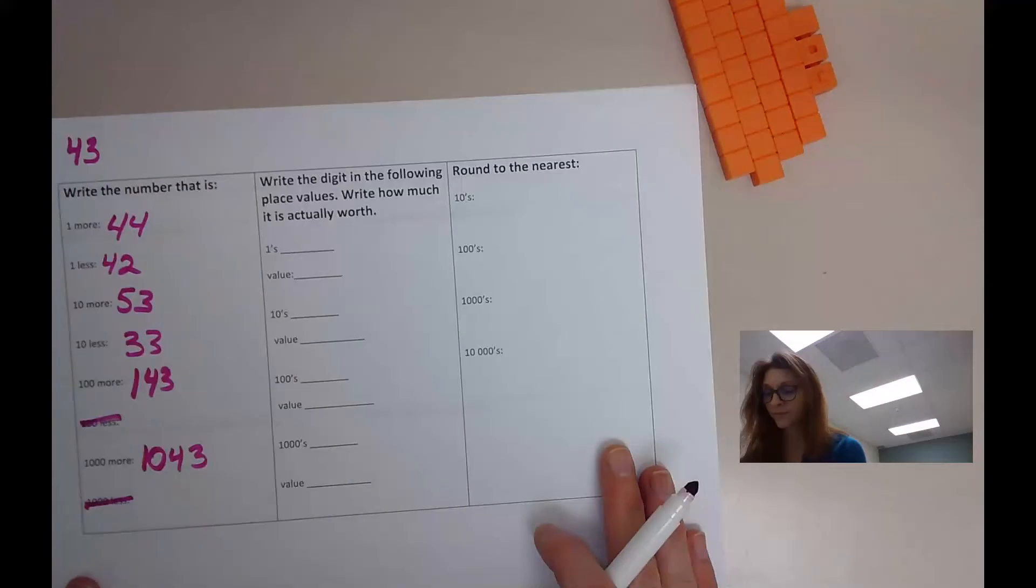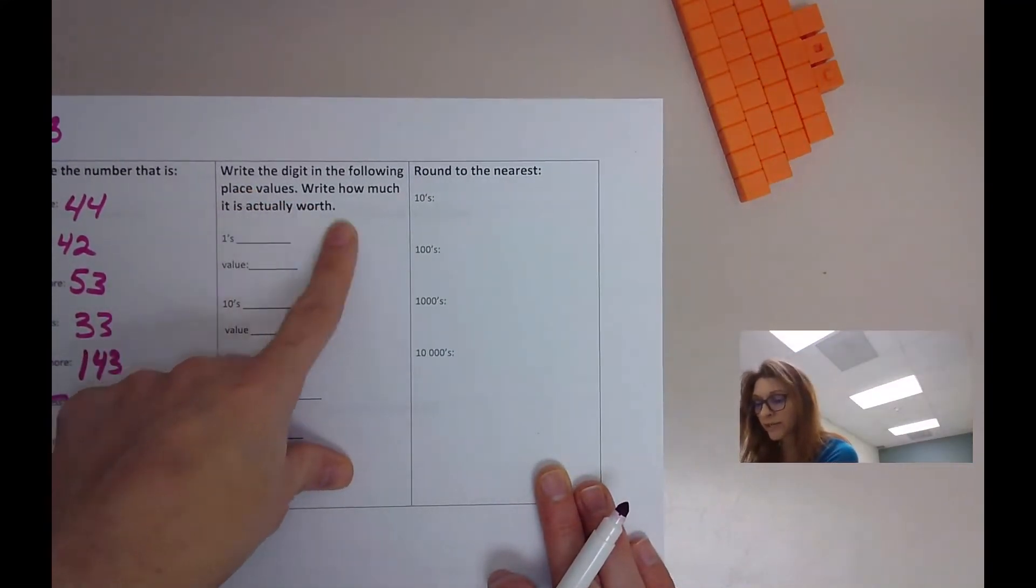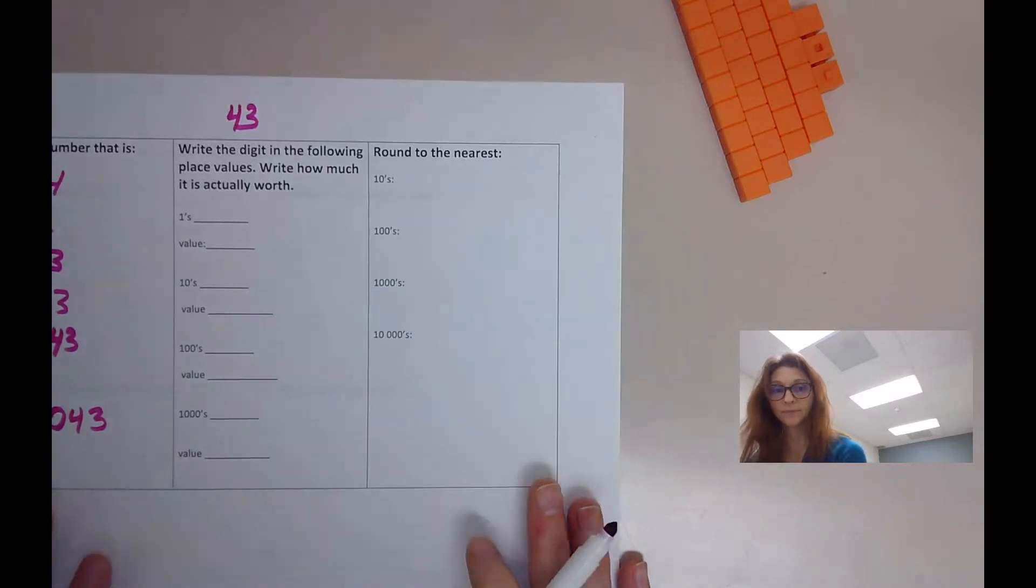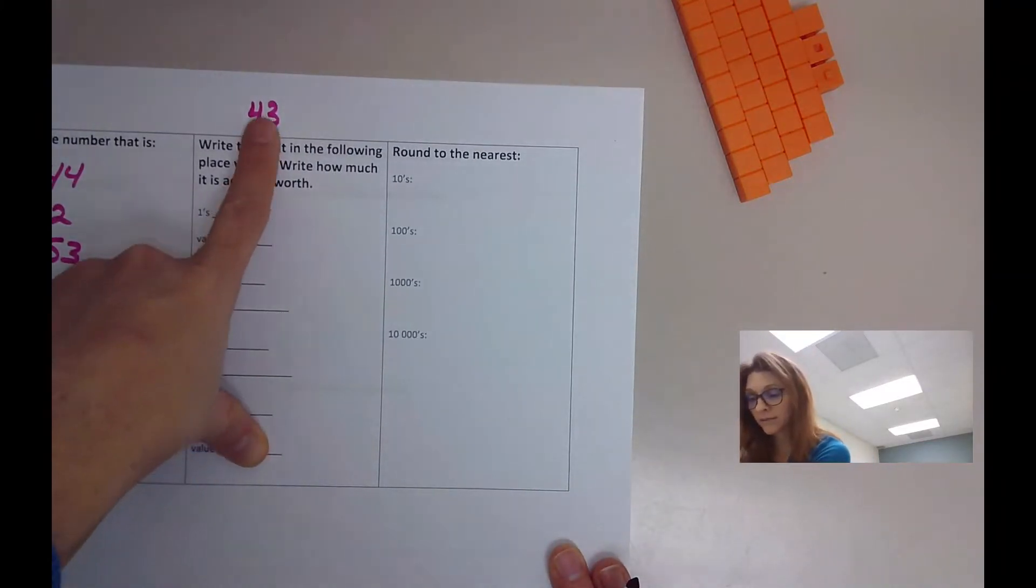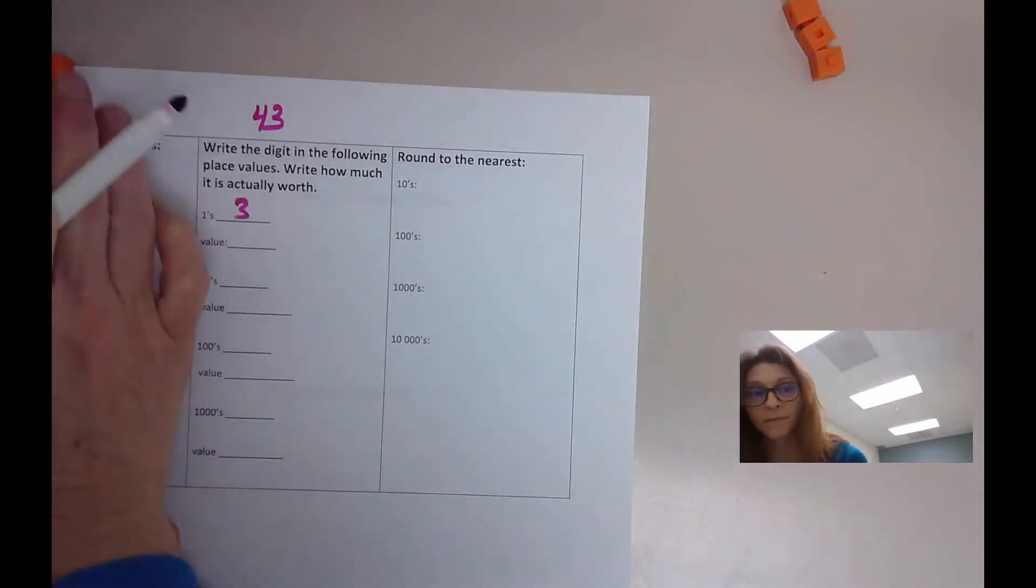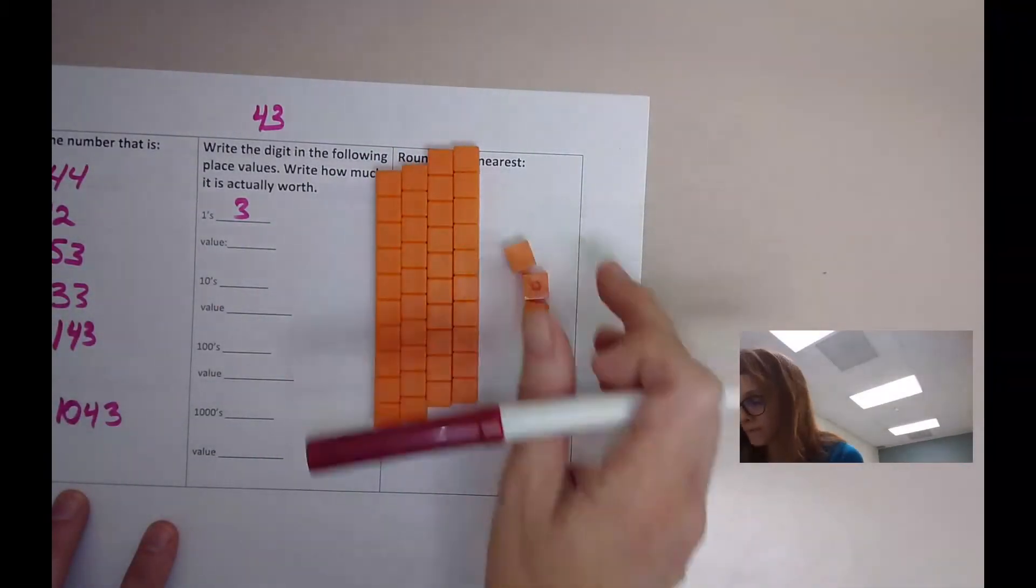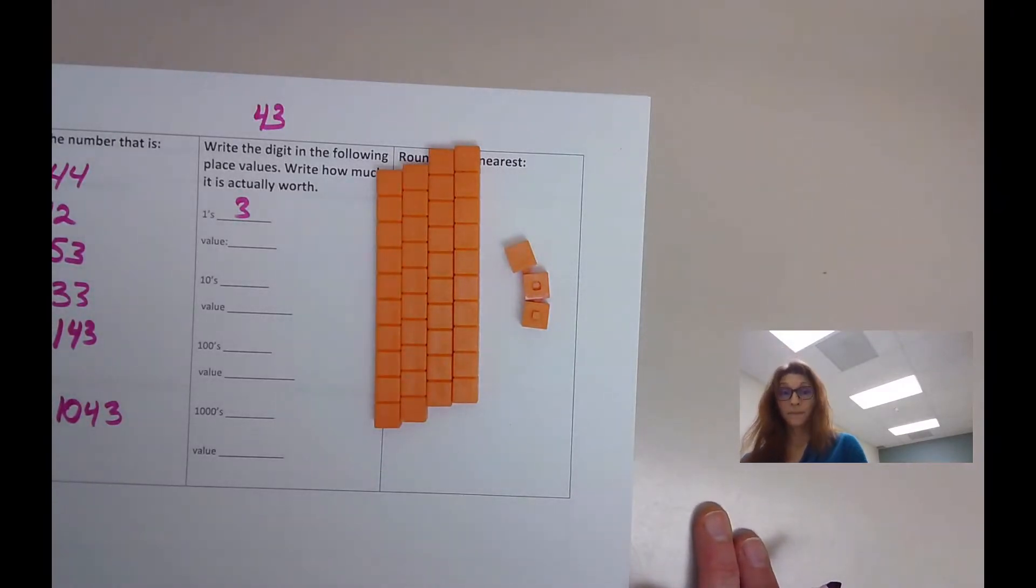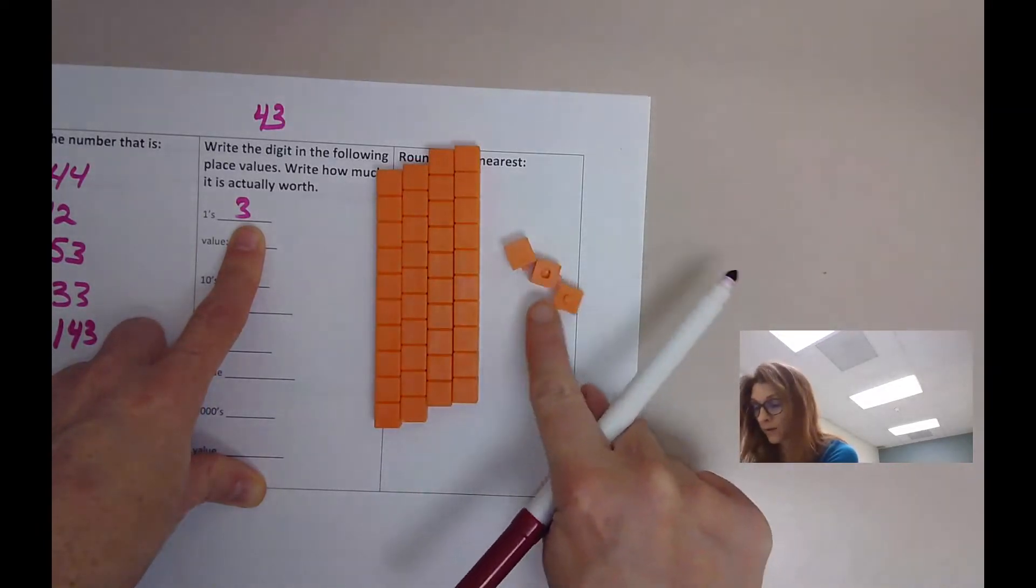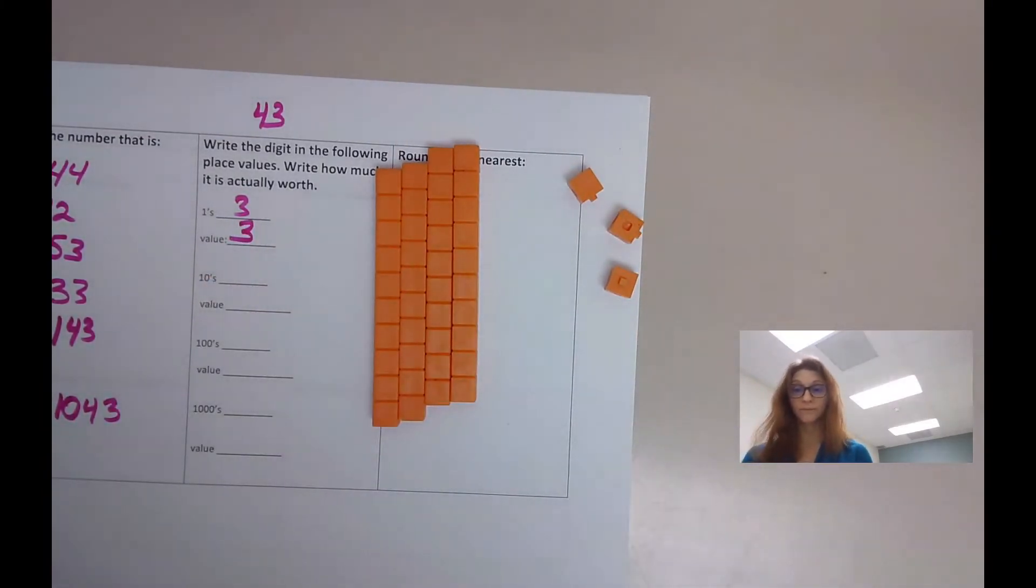Next column on this page. Write the digit in the following place values. Write how much it is actually worth. So remember, our number is 43. What digit is in the ones? 3. Right? Here's our 40. How much is this 3 worth? It's just worth 1, 2, 3. It's worth its value, is 3.